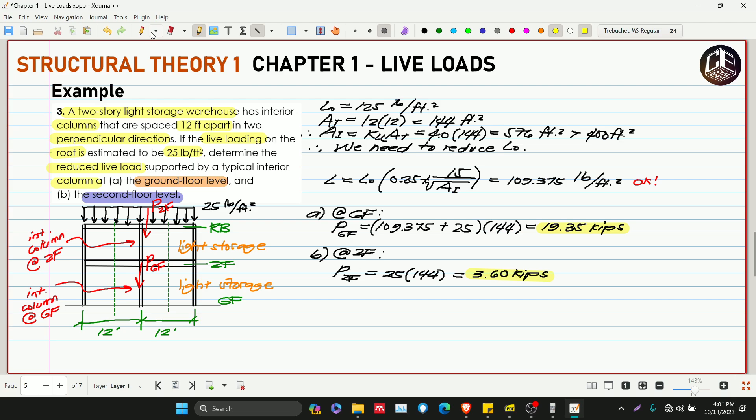Yun, yun siya dun. Kung ang tinatanong naman is ilan yung total live load na ipapasa papunta dun sa foundation, yun na yun yung sa ground floor na mismo, yun 19.35 kips yung ipapasa papunta rito sa ating foundation or footing dun sa interior column. Okay, so ganyan lang naman kasimple yung ating chapter 1 live load. Sana marami kinutunan dito sa ating topic na ito.